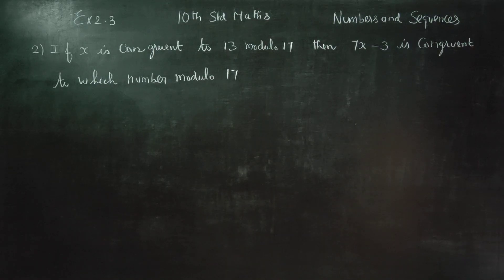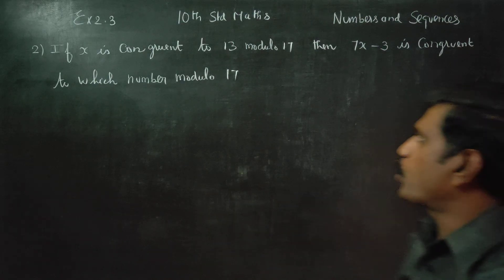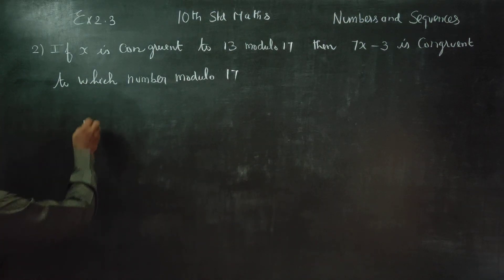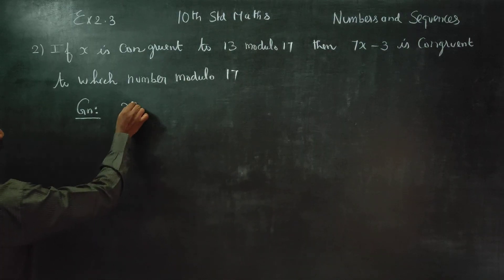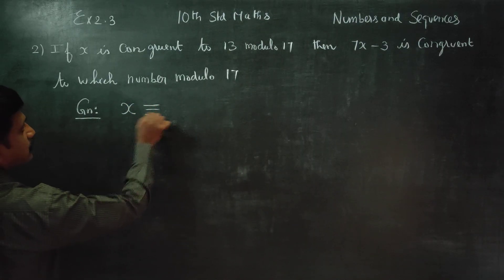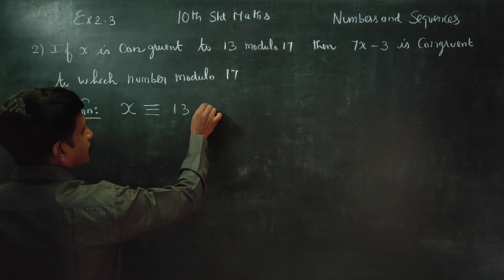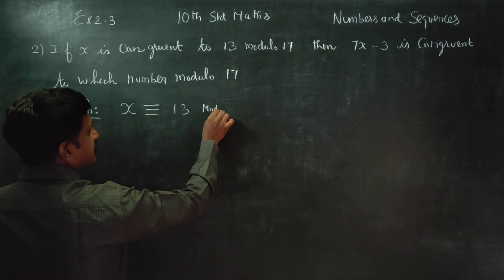In exercise number 2.3 sum number 2, if x is congruent to 13 modulo 17, given x is congruent to 13 modulo 17.